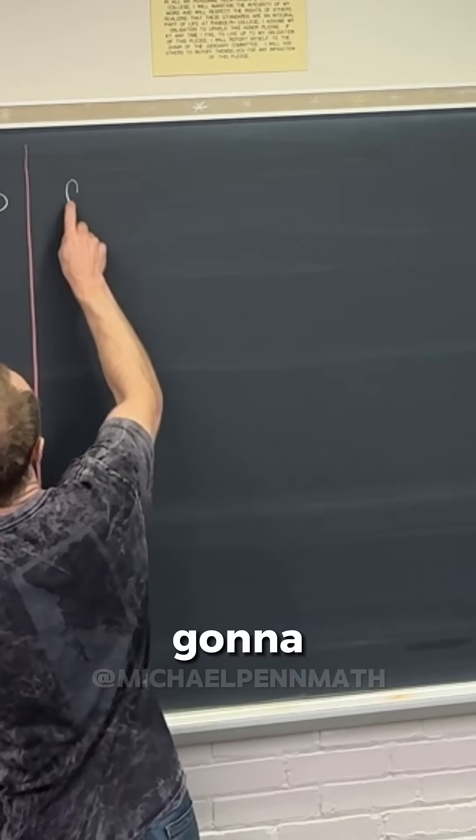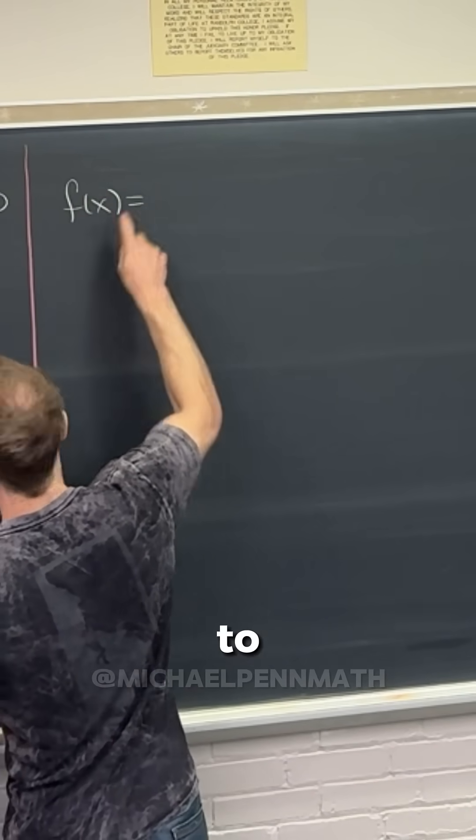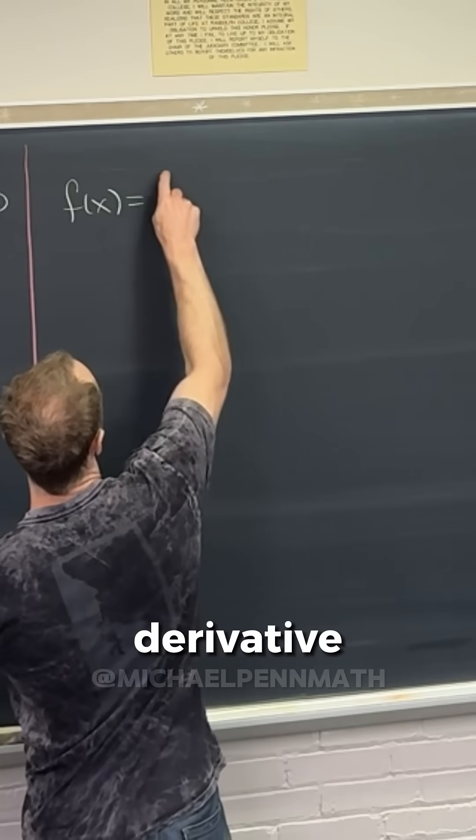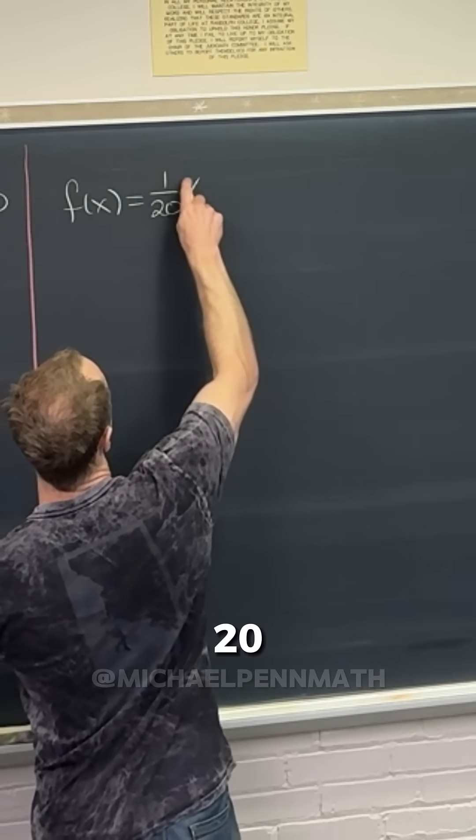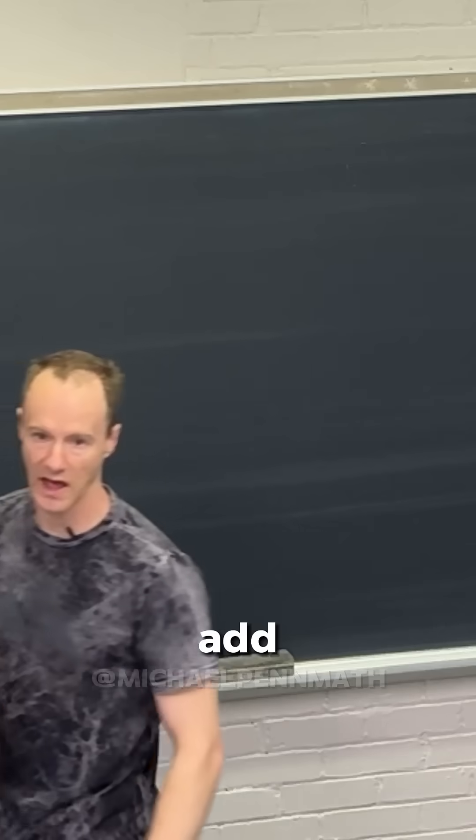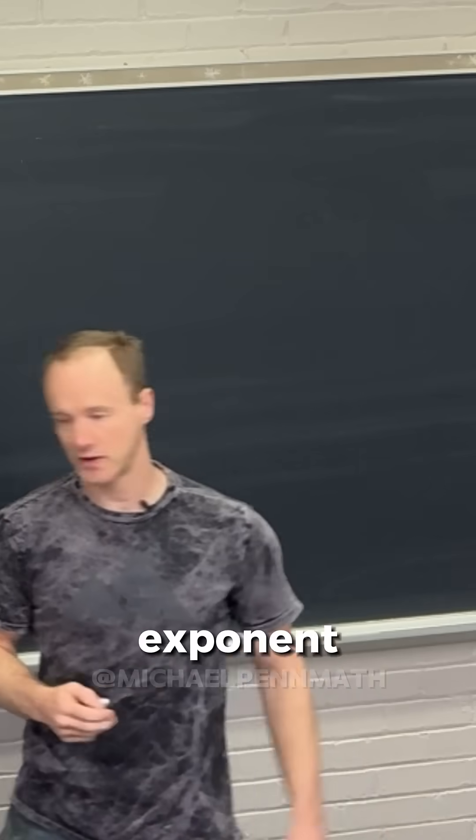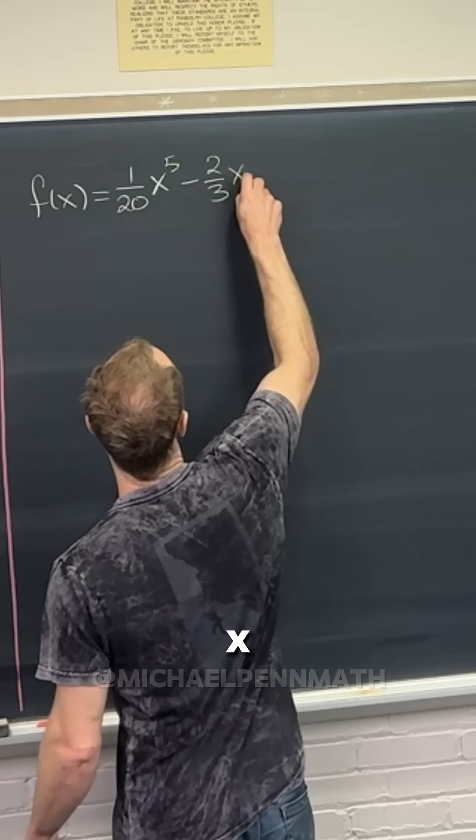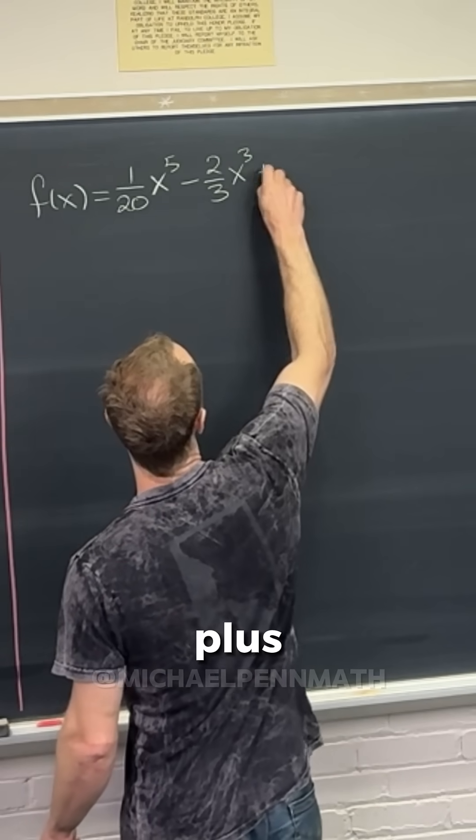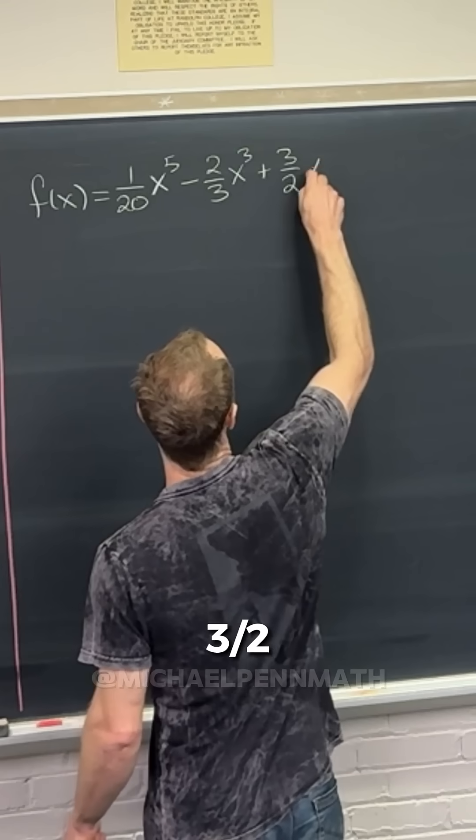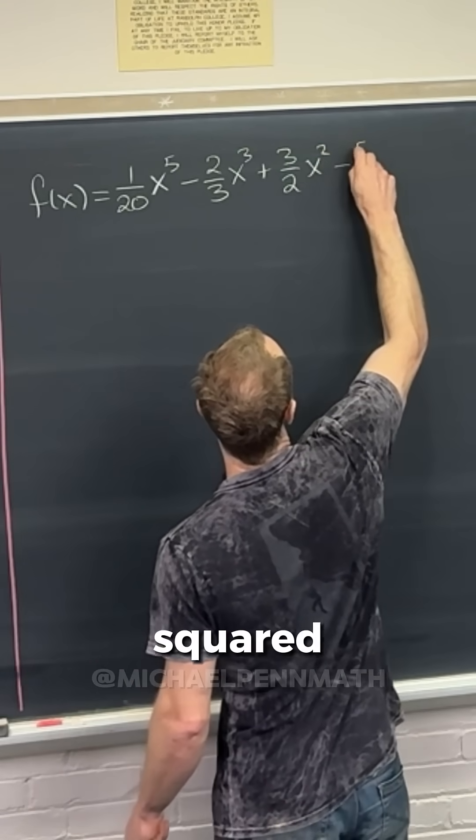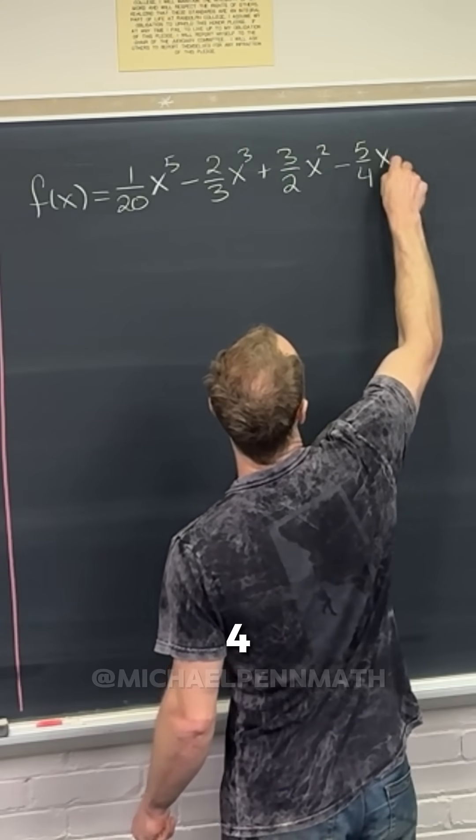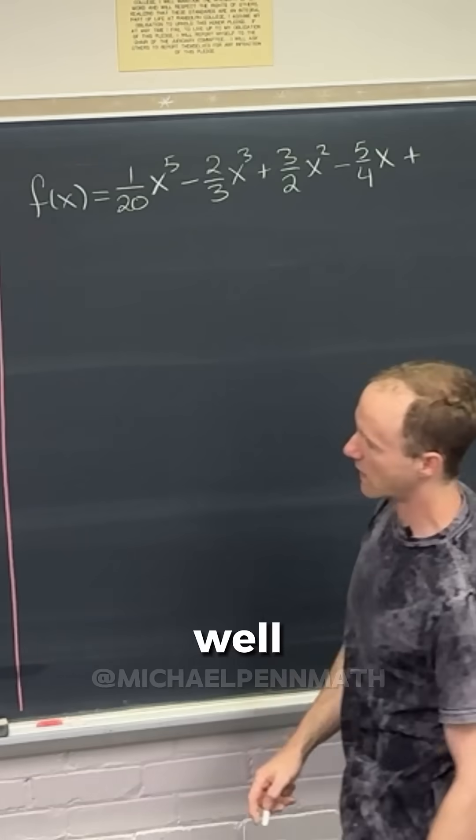So that's going to give us f of x is equal to, let's see, taking the antiderivative we get one over 20 x to the five, right, add one to the exponent divided by the new exponent minus two thirds x cubed kind of same reason, plus three halves x squared minus five over four x and then plus